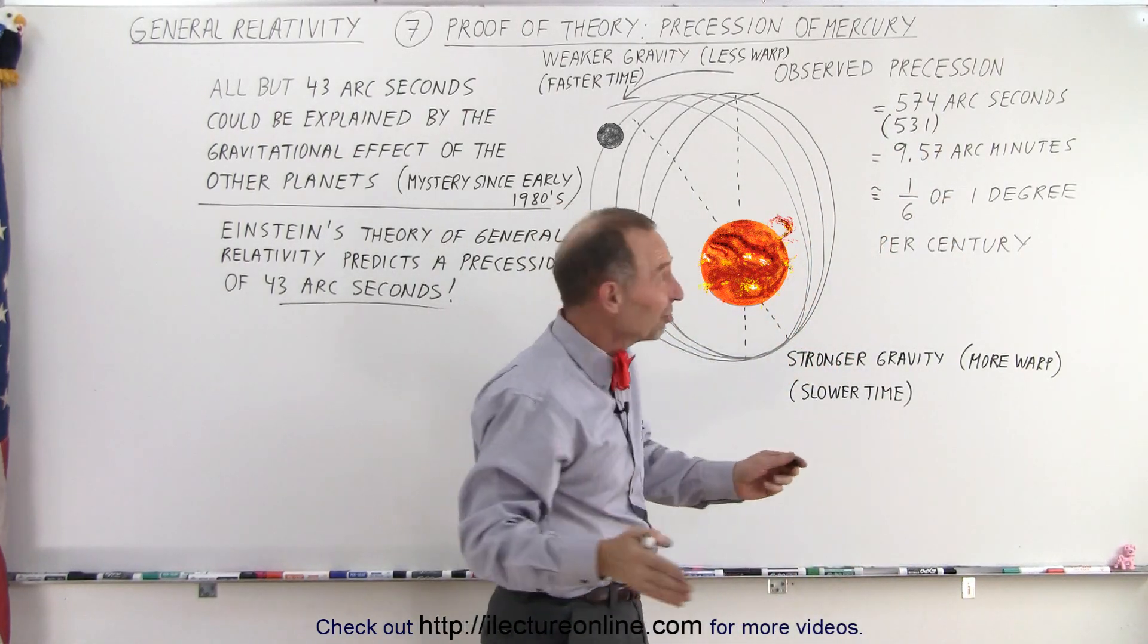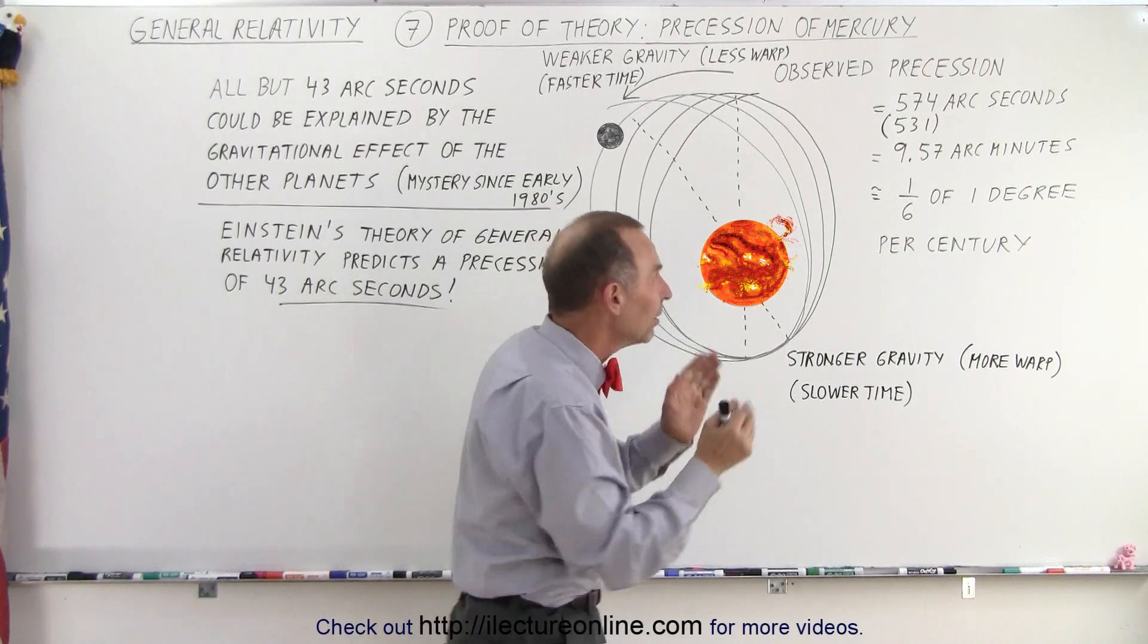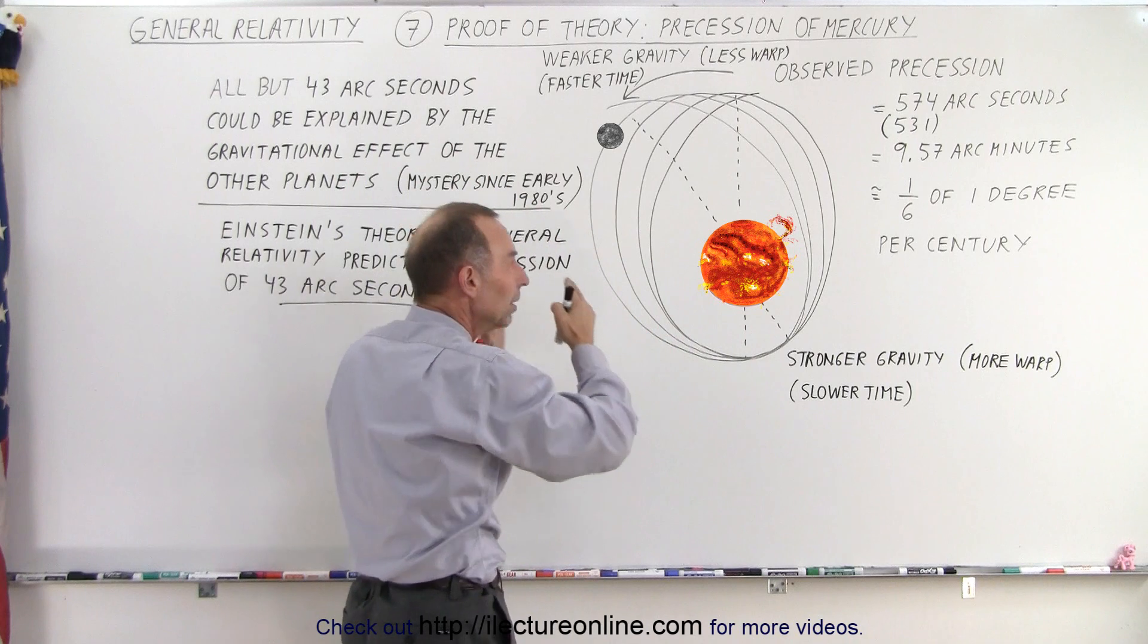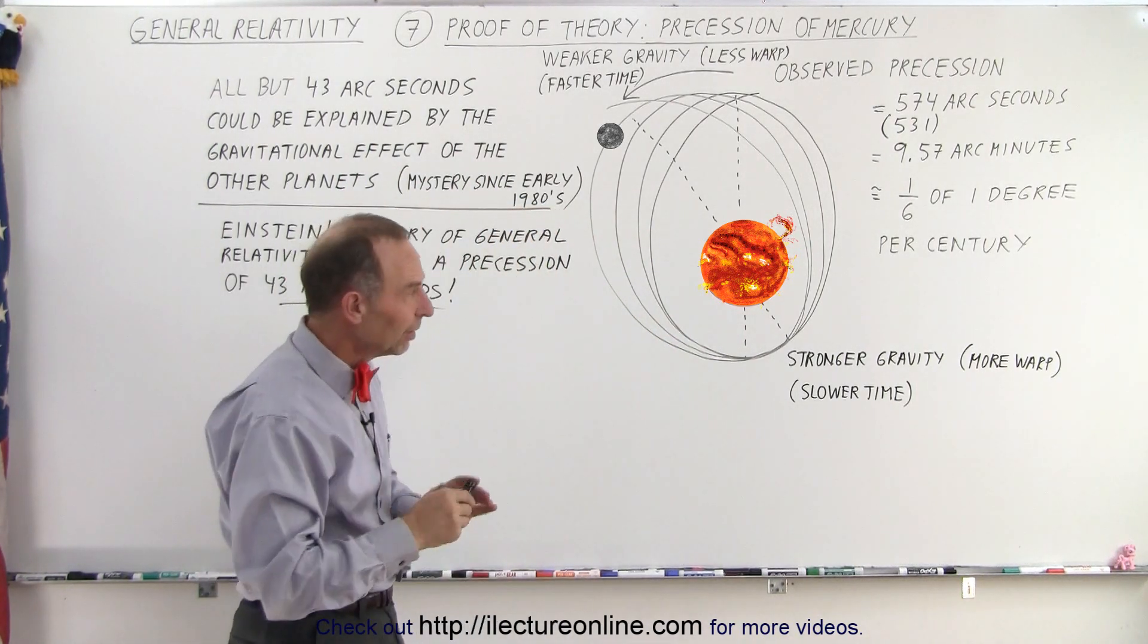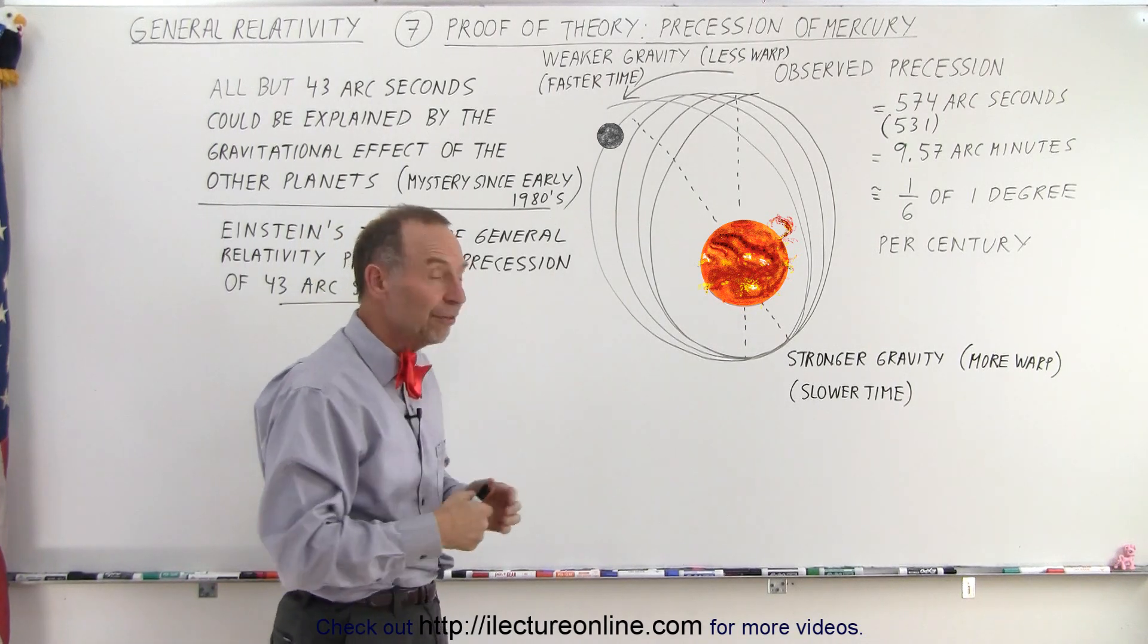There was an additional 43 arc seconds that nobody could explain. They had no way to explain why the shift was 43 arc seconds more than it should be per century. Until Einstein, until the concept of the general theory of relativity.